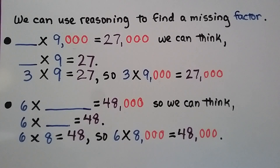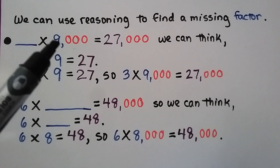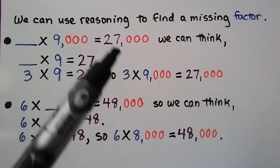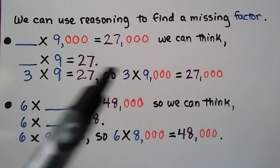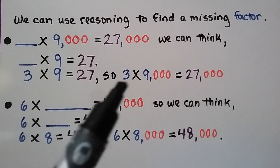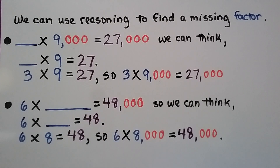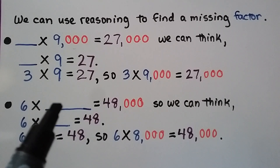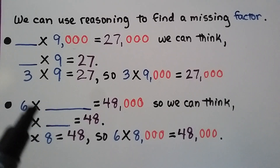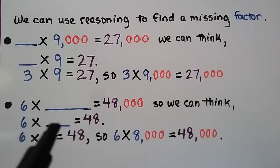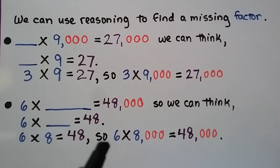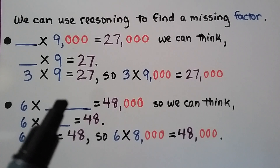We can use reasoning to find a missing factor. For blank times 9,000 equals 27,000, we think: blank times 9 equals 27. We have three zeros, so there are three zeros in the product. 3 times 9 equals 27, so 3 times 9,000 equals 27,000. For 6 times some number equals 48,000, there are no zeros in the 6, so the missing number must have three zeros. We think 6 times 8 equals 48, so the missing number is 8,000.